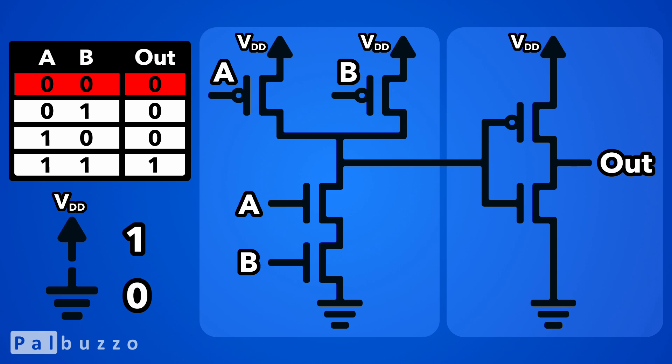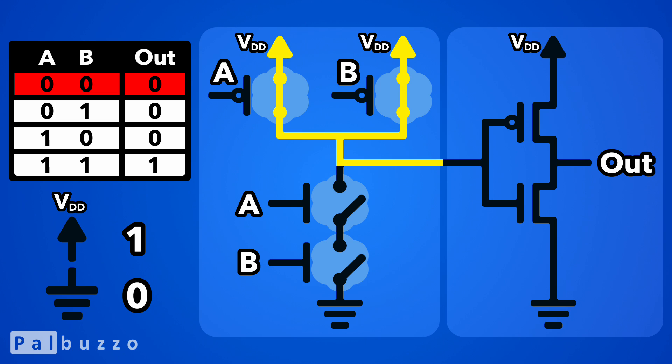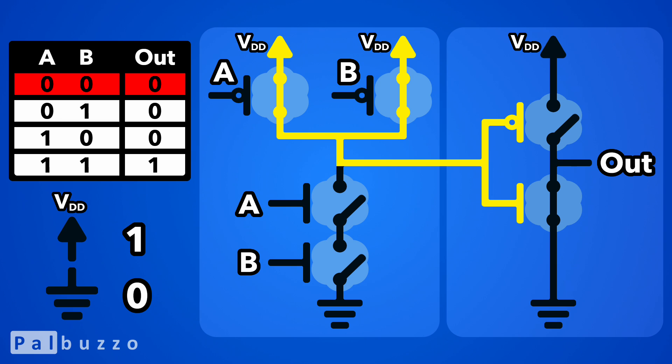Keeping in mind that ground represents 0 and VDD represents 1, let's examine the first entry in the truth table. When both inputs are 0, it will cause the PMOS transistors in the first stage to connect the intermediate output to VDD. And since that's used as the input to the second stage, it will cause the NMOS transistor in the second stage to connect our final output to ground, producing a result of 0.